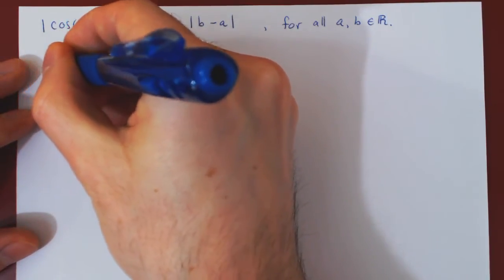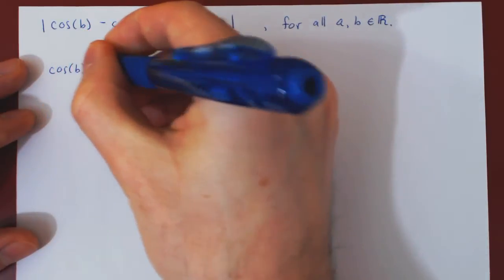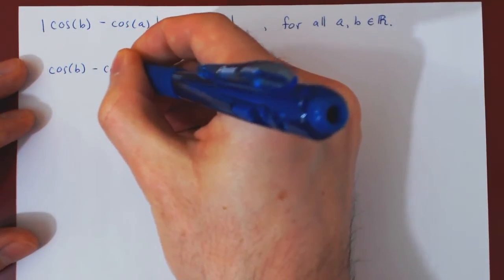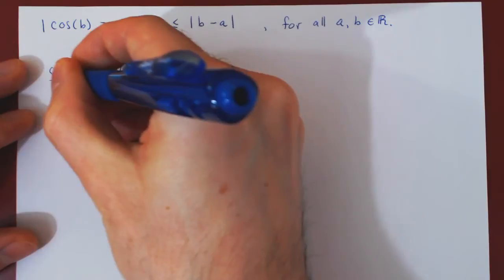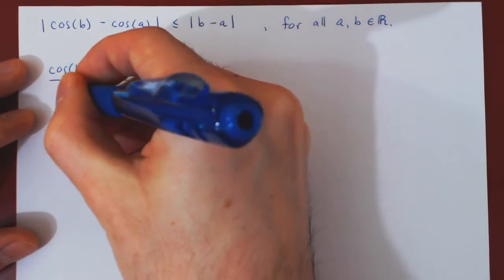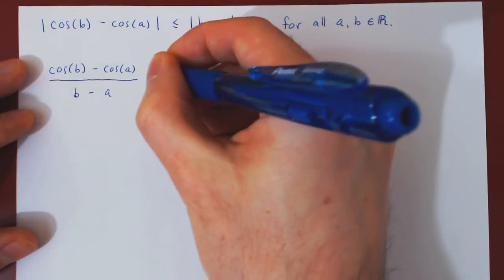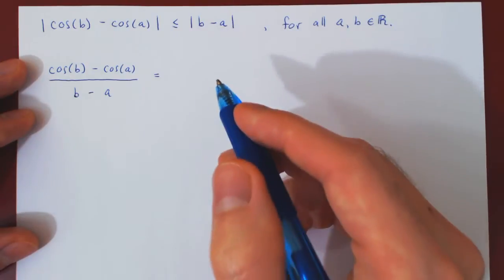So we have that cosine of b minus cosine of a, total change in y over total change in x, b minus a, will be equal to the derivative of the function.